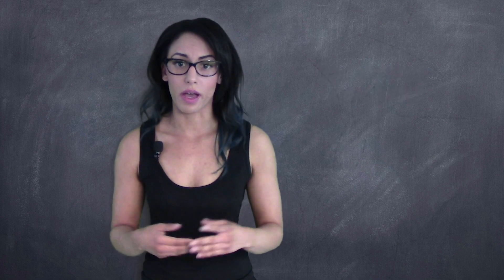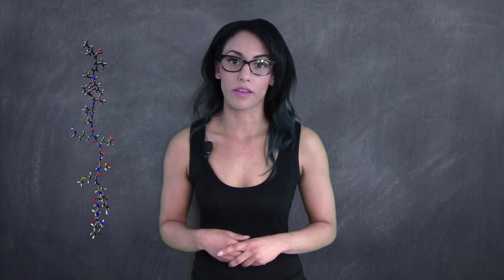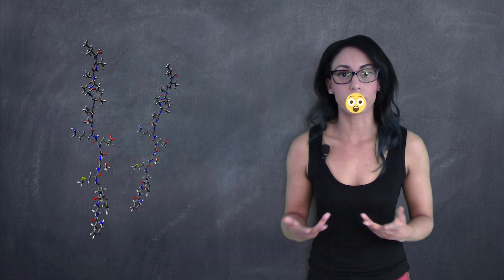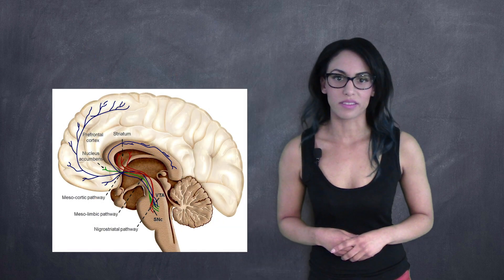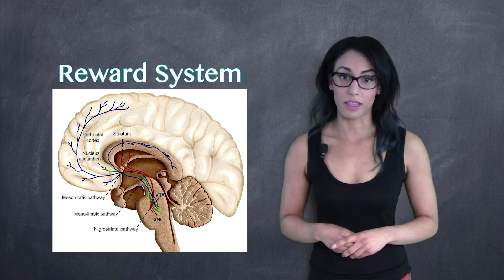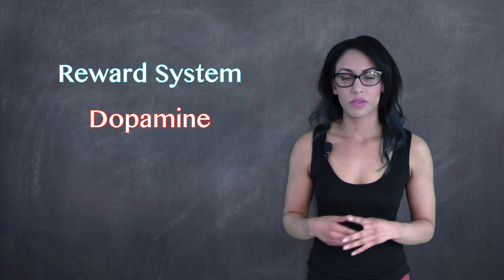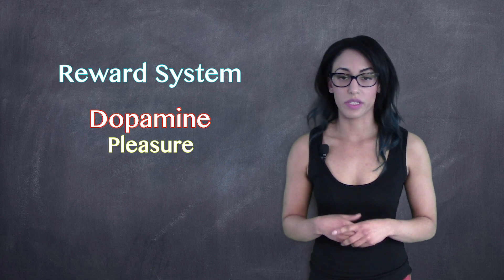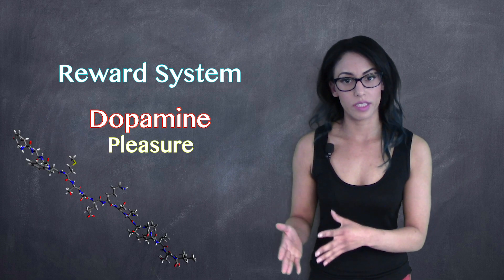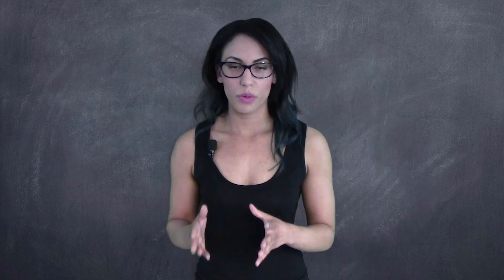Normally, this reaction is triggered naturally by endorphins. When we conduct pleasurable activities designed to keep us alive, such as eating, this reaction activates the mesolimbic pathway, also known as the reward system in the brain, that then releases dopamine. This reaction is what causes feelings of pleasure when either endorphins are released or after consuming an opioid-based drug.